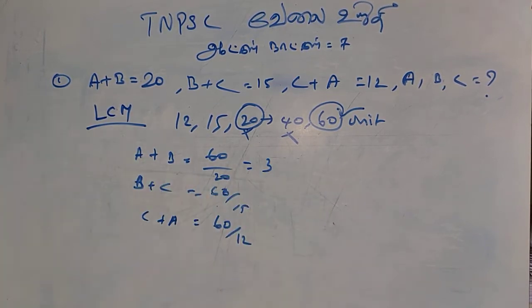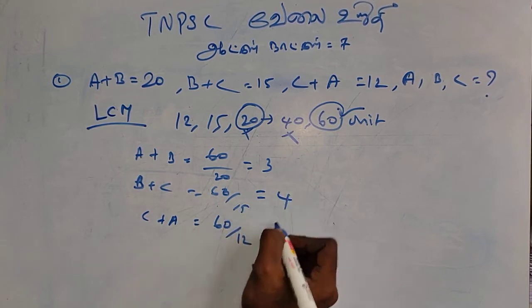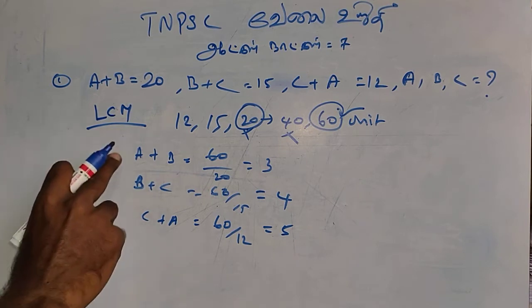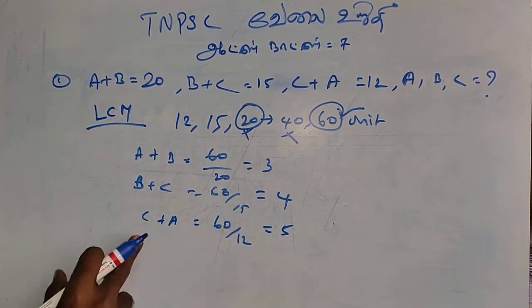3, 20, 60, 4, 15, 60. So, a plus b, b plus c, c plus a.